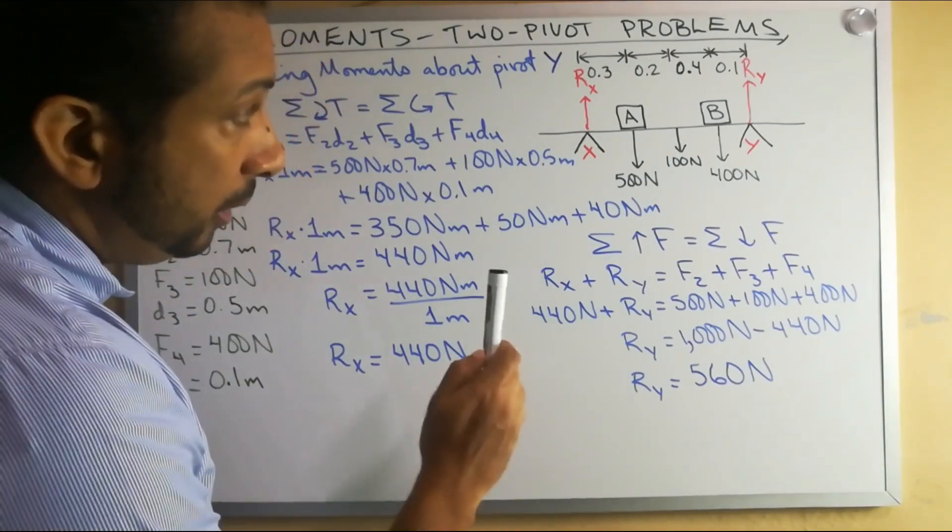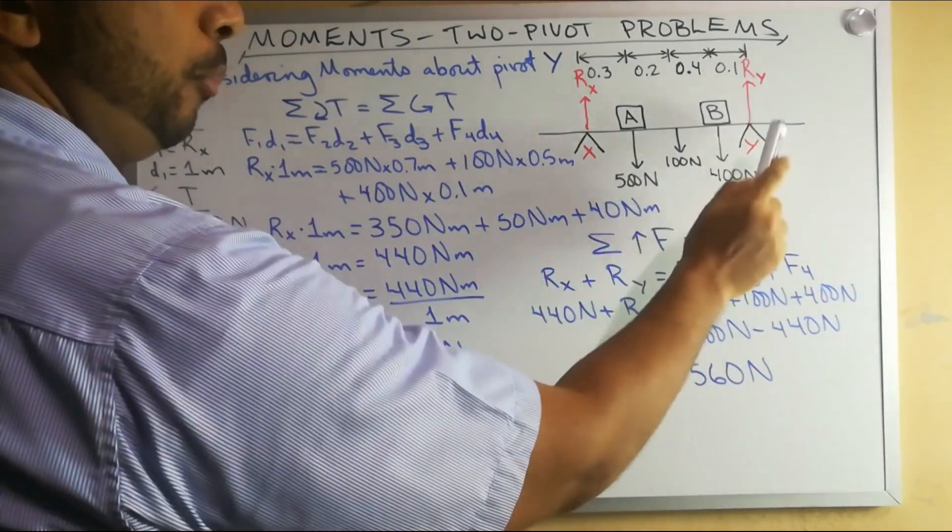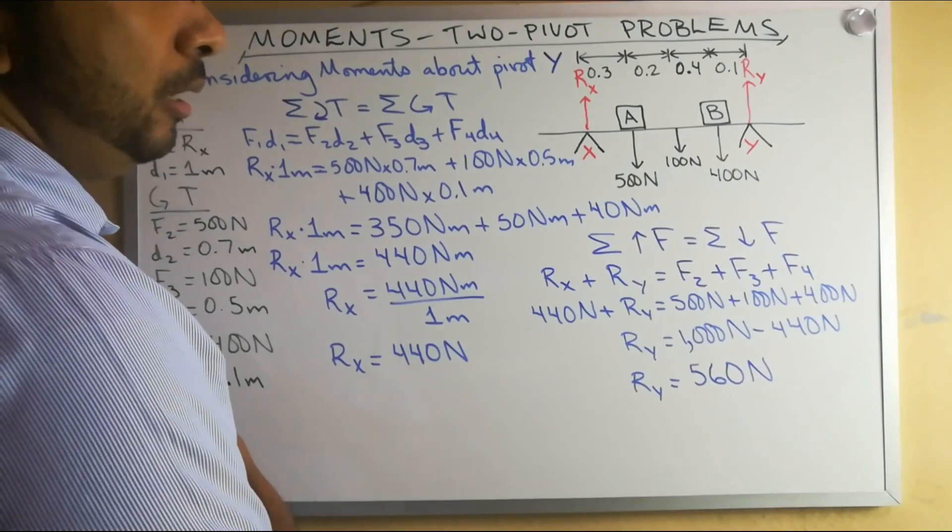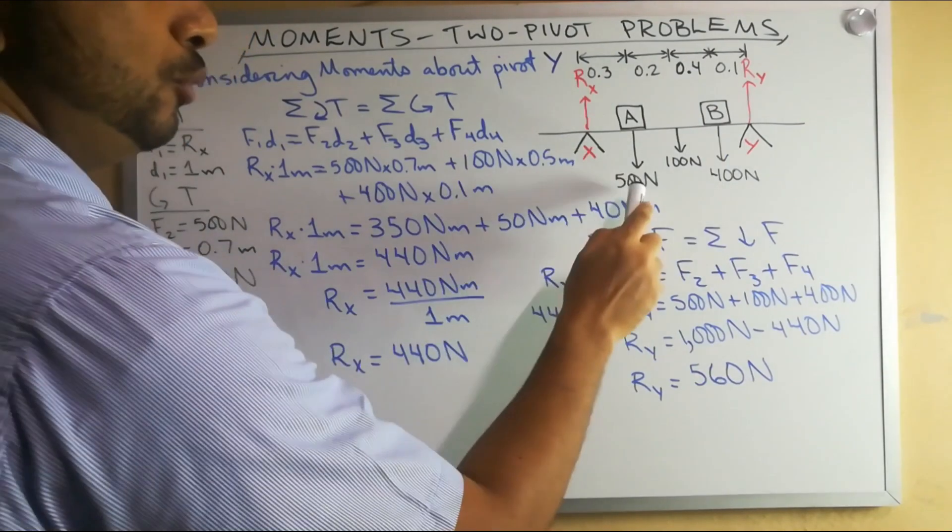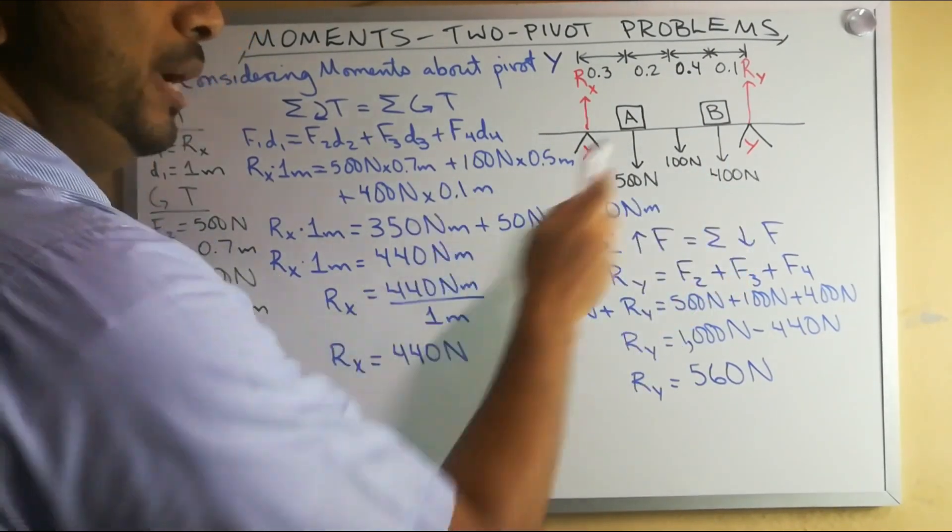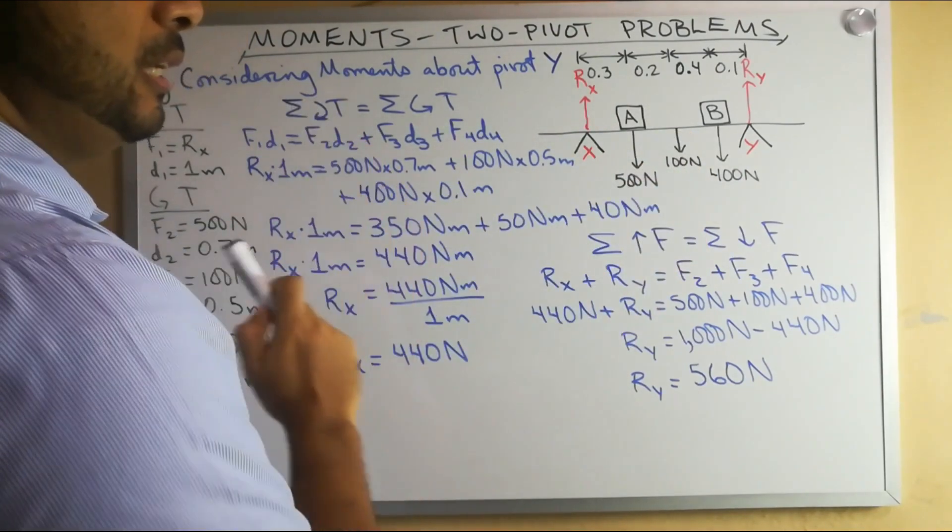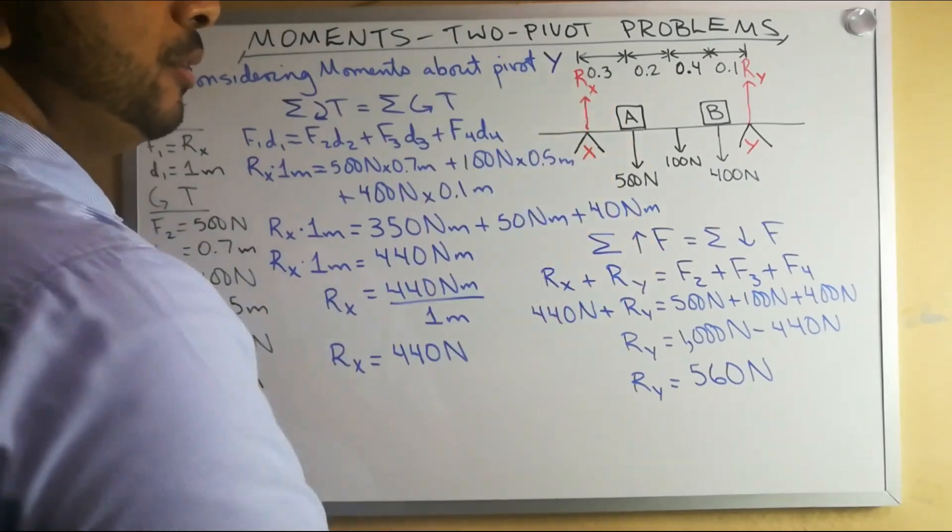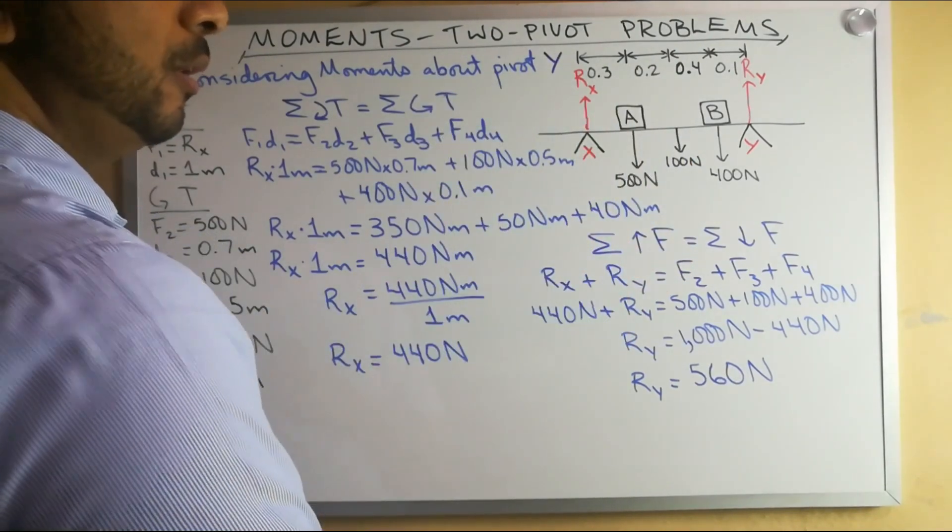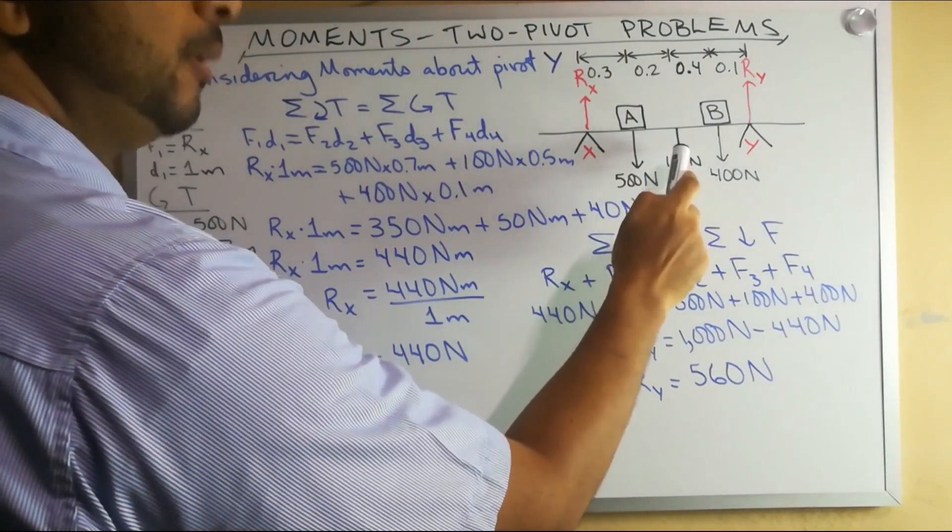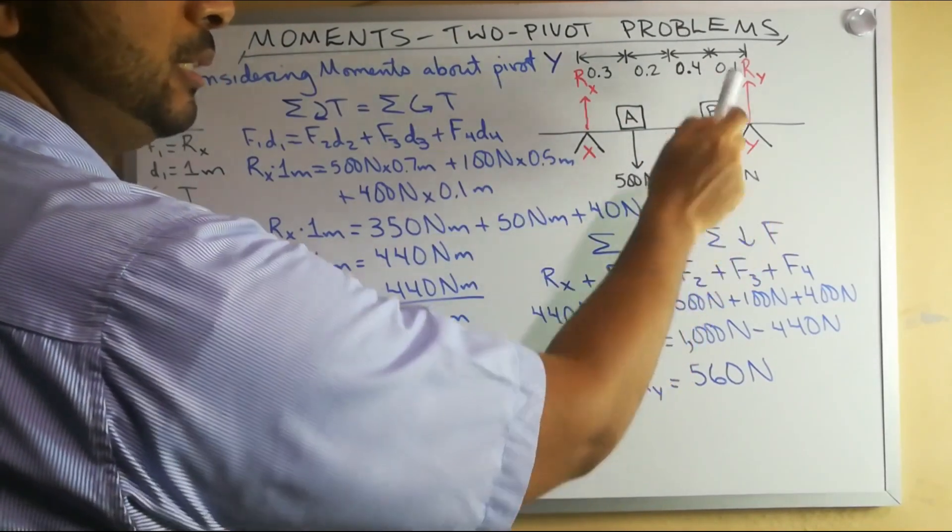In this problem we have a uniform plank that is supported by two pivots at points X and Y. In between X and Y we have two objects A and B with weights of 500 newtons and 400 newtons respectively. The weight of the plank itself is 100 newtons. We know the distance from X to A is 0.3 meters. From A to the center of gravity of the plank is 0.2 meters. From the center of gravity to point B is 0.4 meters and from point B to point Y is 0.1 meters.